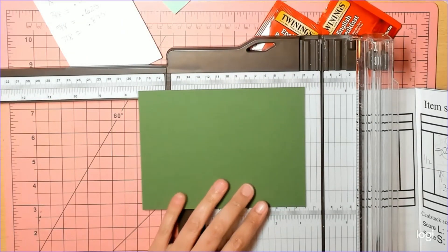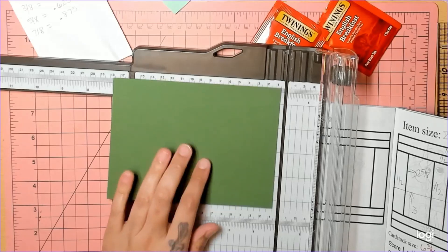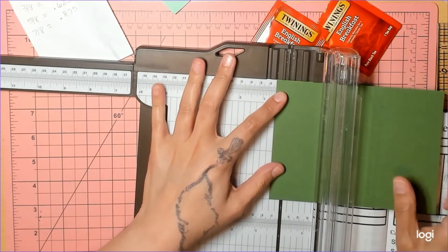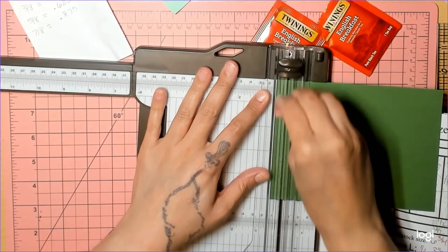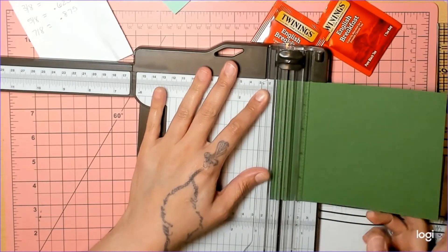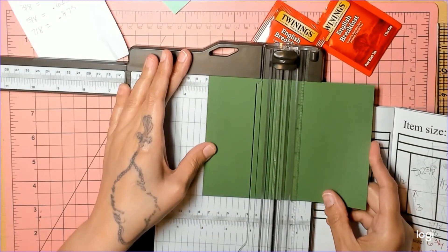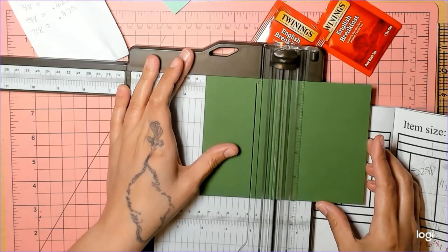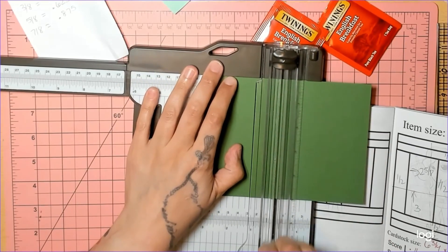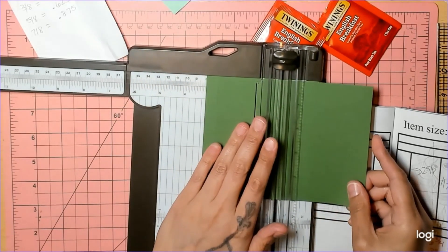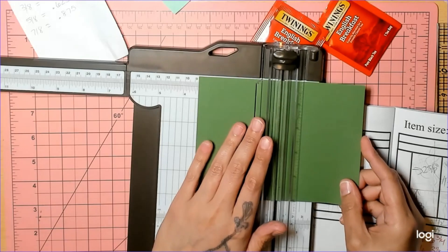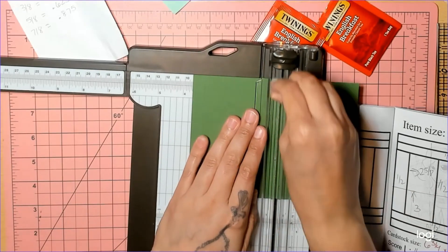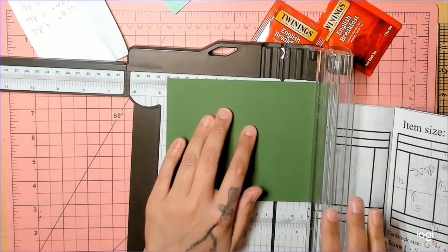Put your six and three-quarter side at the top of your scoreboard or your paper trimmer, and you're going to score it at half an inch, three and an eighth, three and five-eighths, three and five-eighths—one, three, five—and six and a quarter.